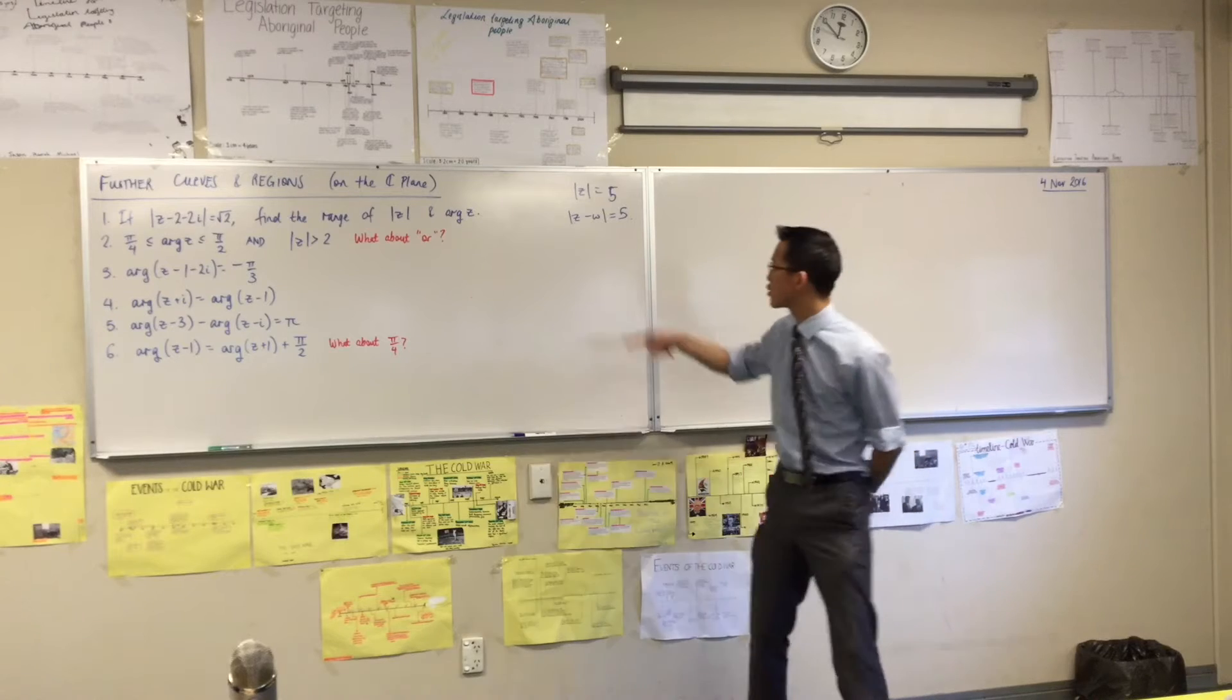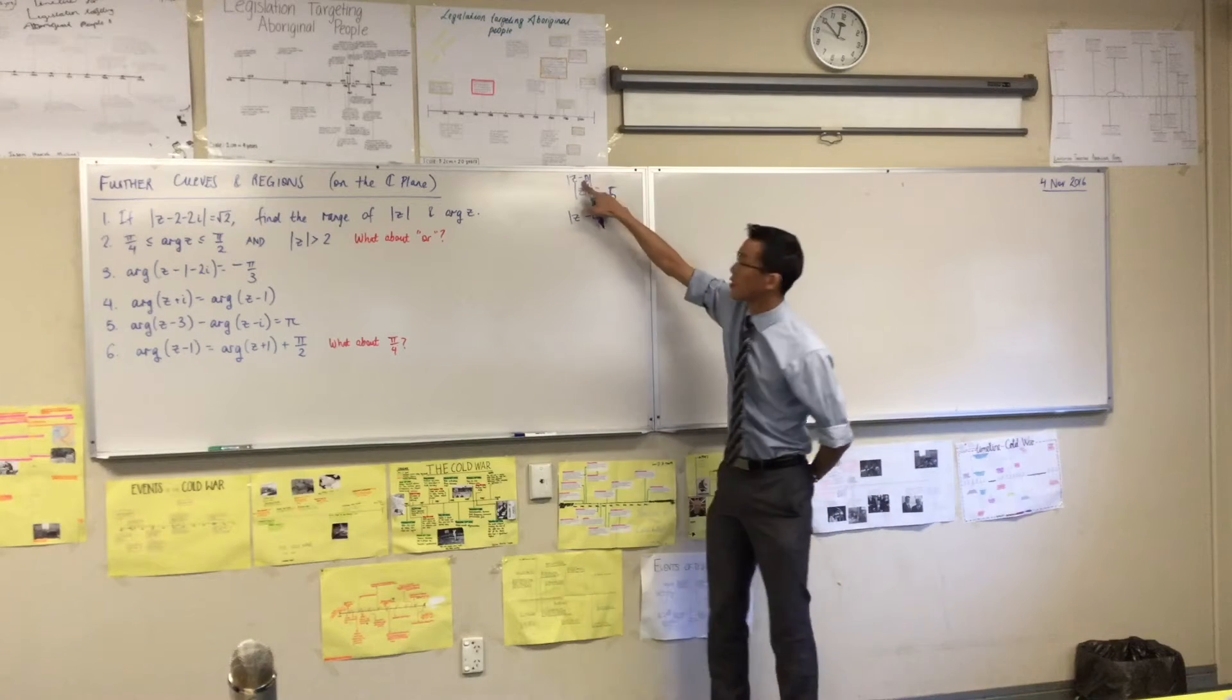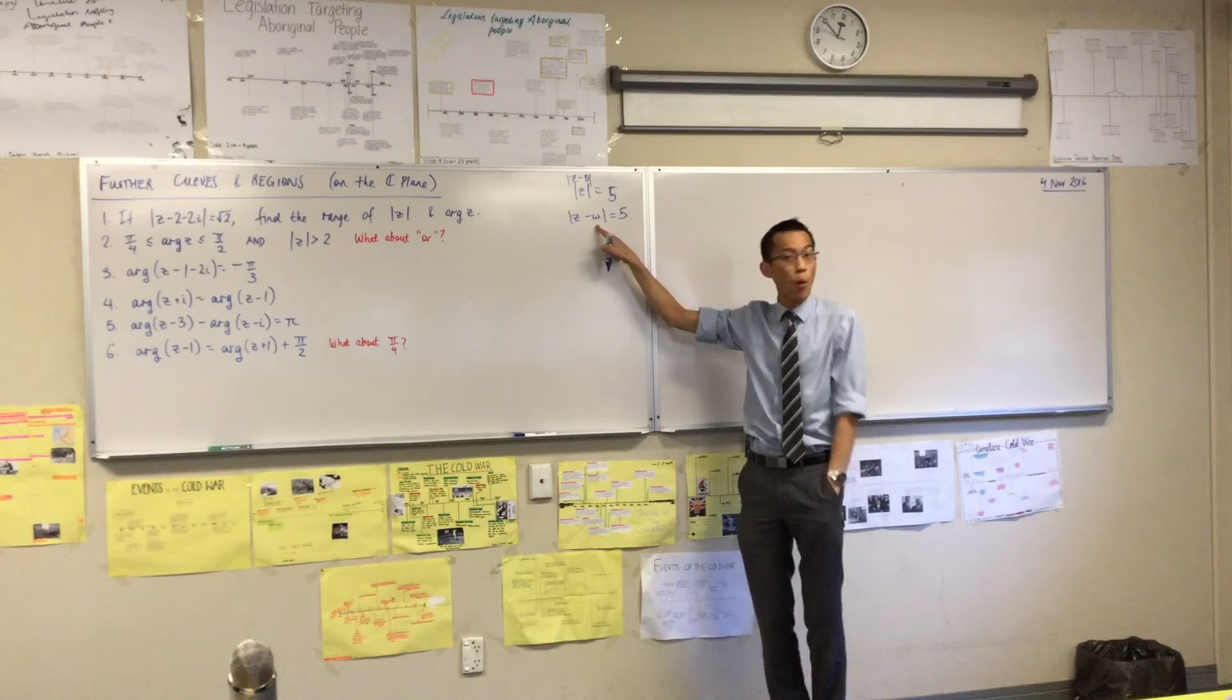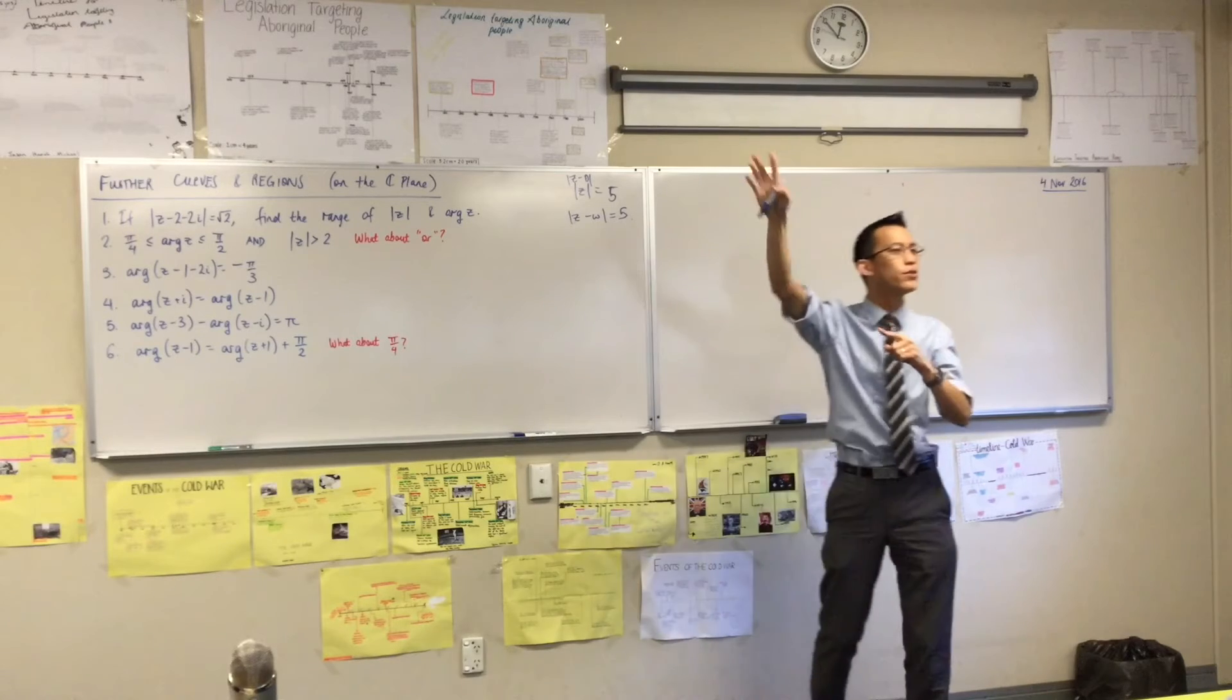Yeah, very good. Instead of measuring from the origin, you're measuring from W. That's your new point of reference. You still have a radius of 5, but your circle's now moved somewhere else.